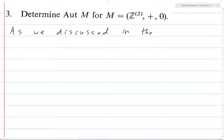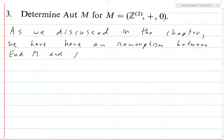So as we discussed in the chapter, we have an isomorphism between End M and M₂(ℤ).